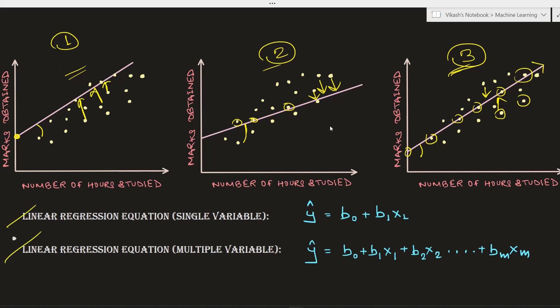Now let's pay attention to two equations: linear regression with a single variable, like in the examples above, and linear regression with multiple variables. In the single variable example, an independent variable like number of hours studied can help predict a dependent variable which is marks obtained, as explained by the equation y = b0 + b1*x1.